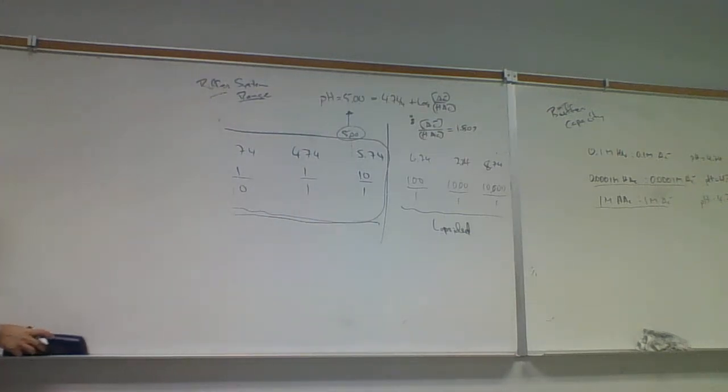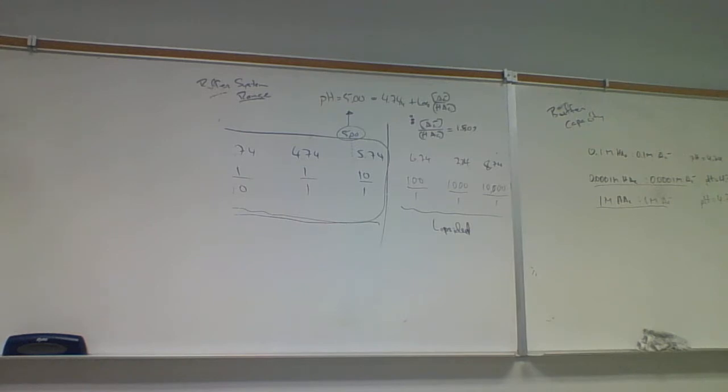As you continue to dilute these buffers, the pH starts to approach 7, because if you don't have that much stuff in there, it's going to resemble pure water.